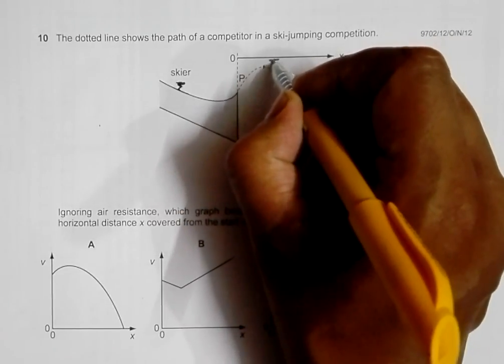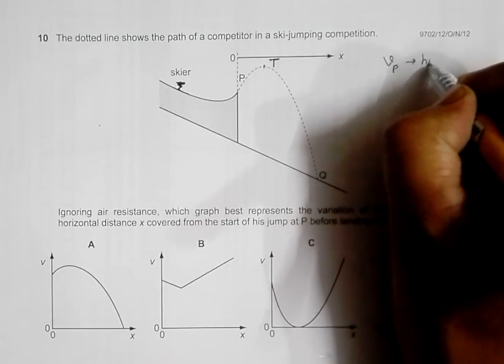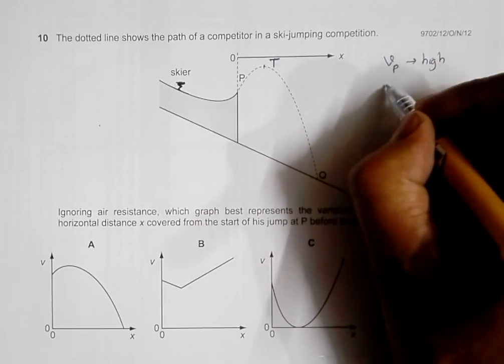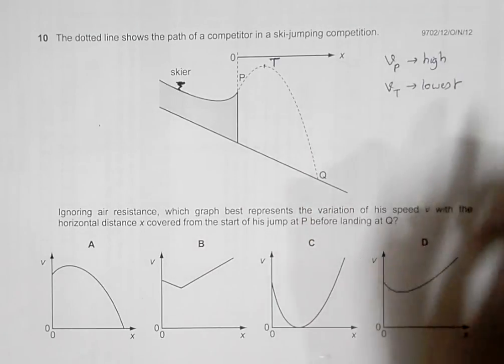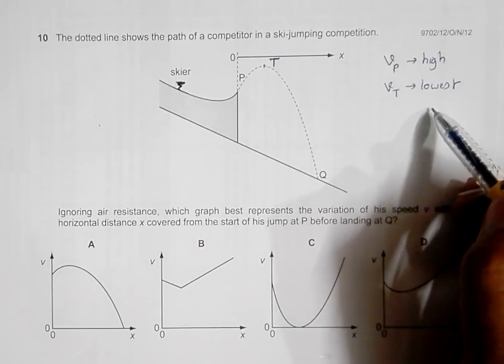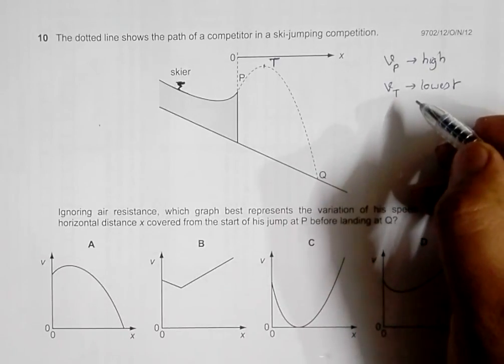So let us say this point, the top point, is T. So velocity at P is high, velocity at T is lowest because in any projectile the velocity at the highest point should be lowest.